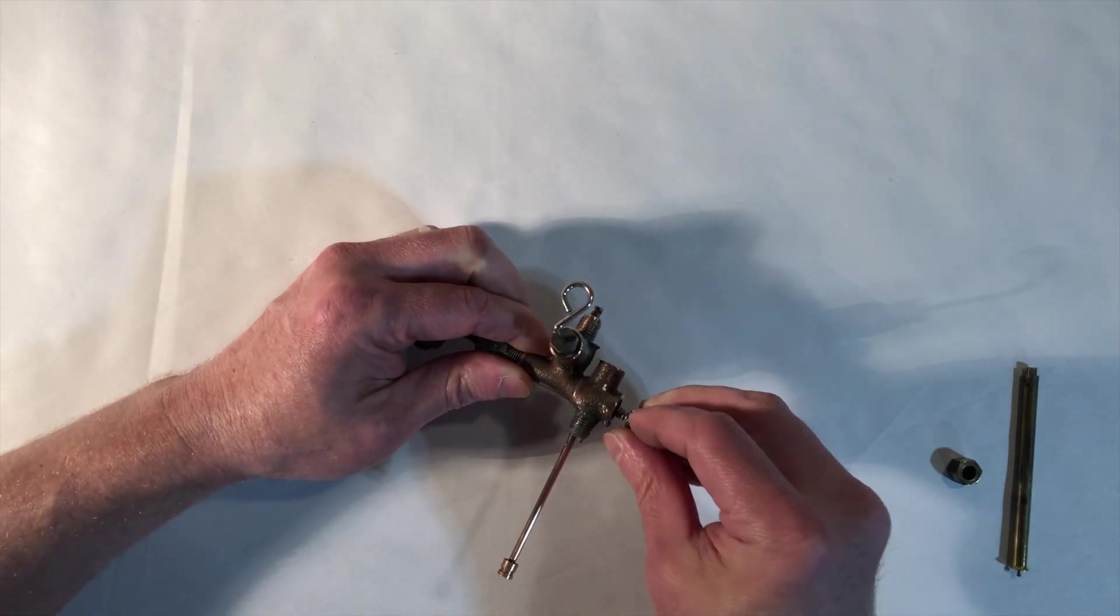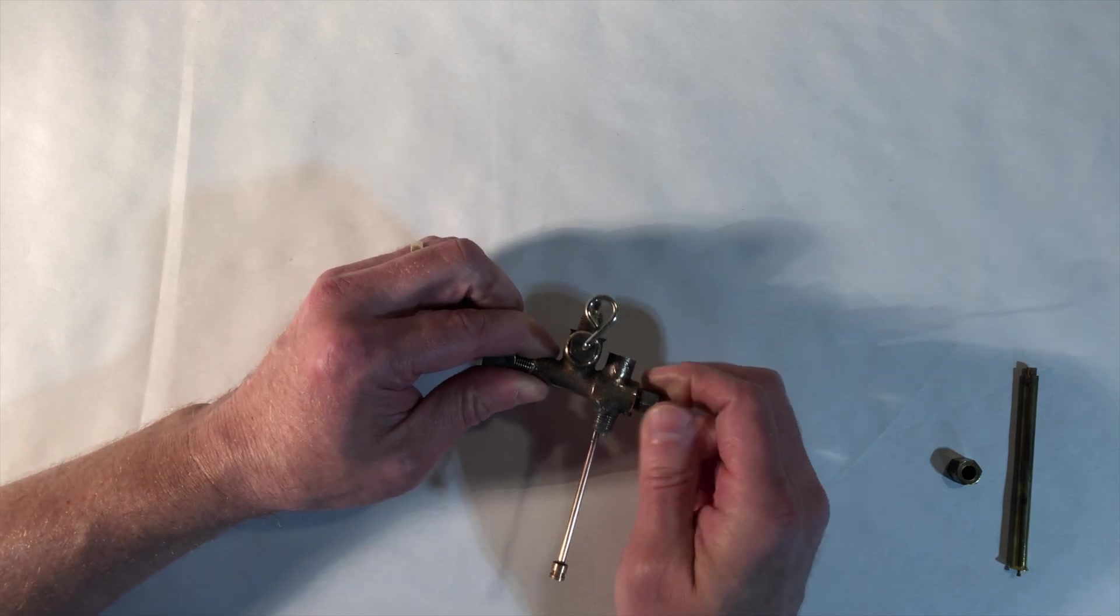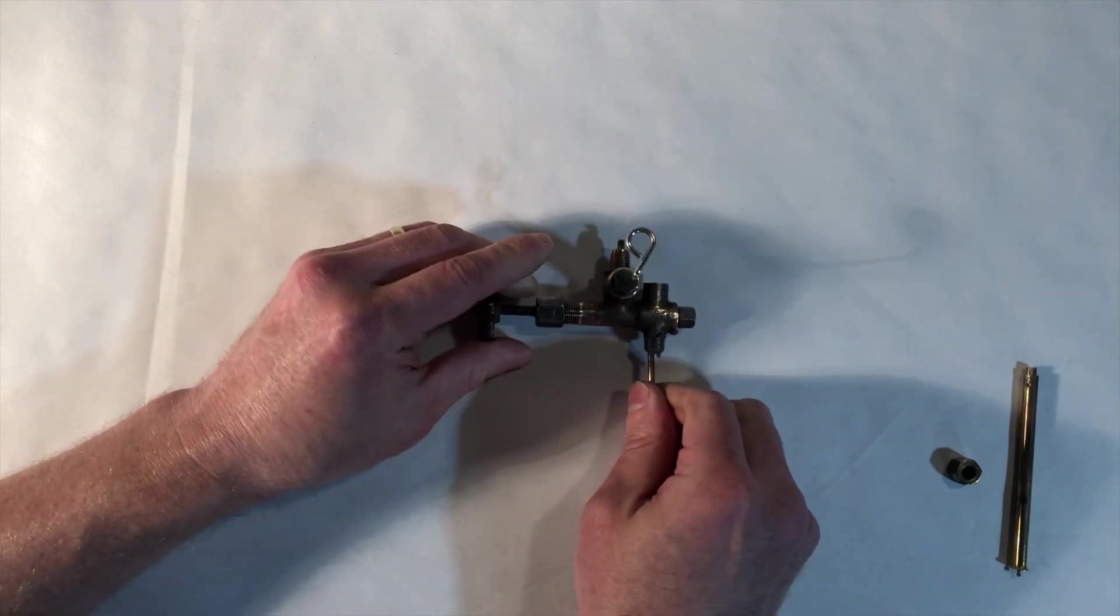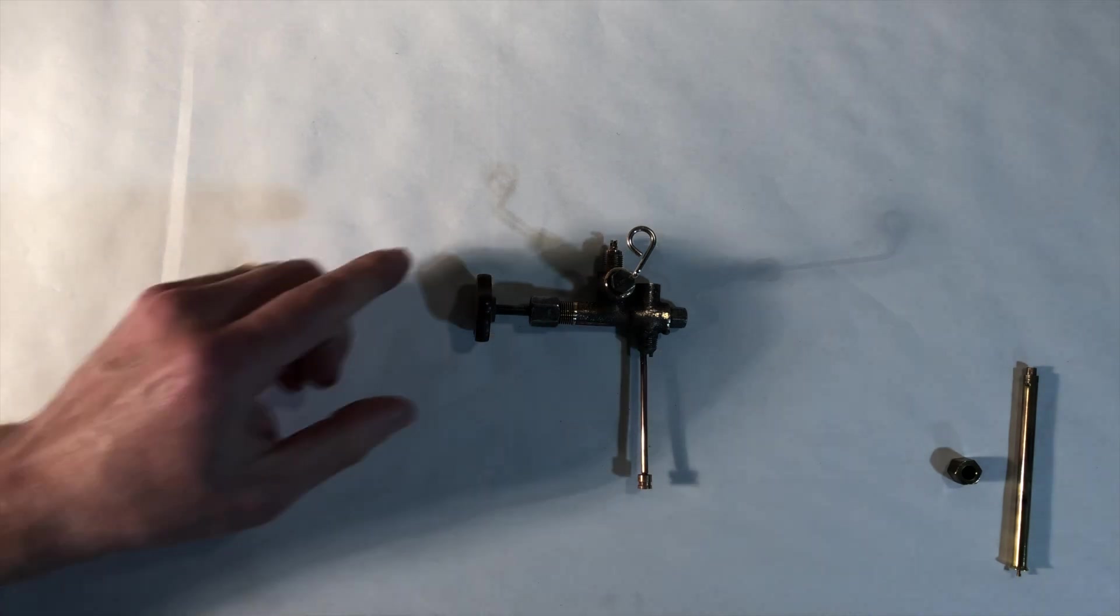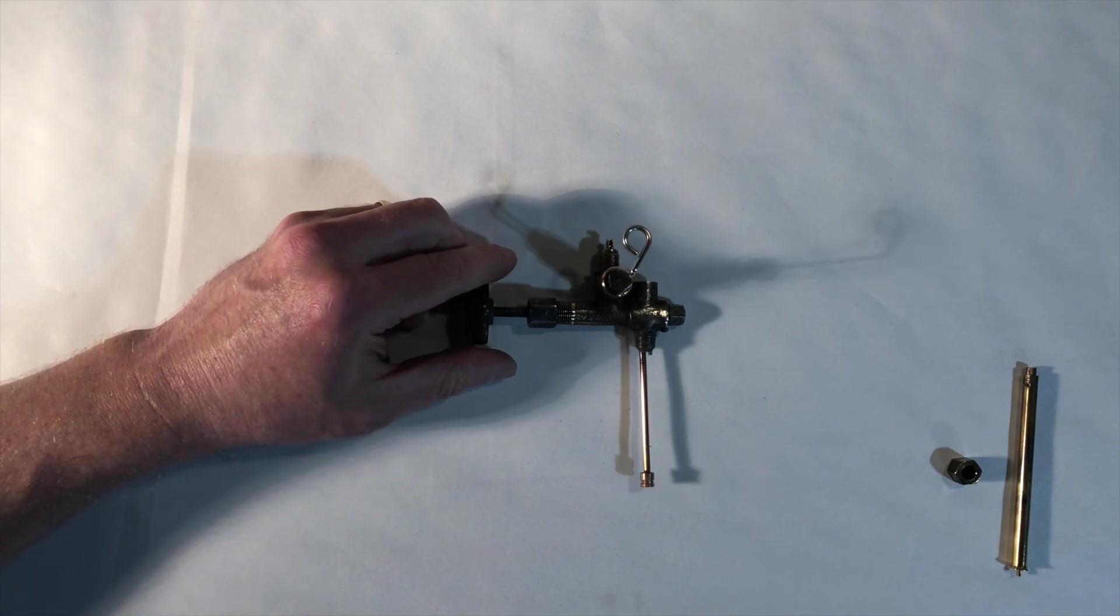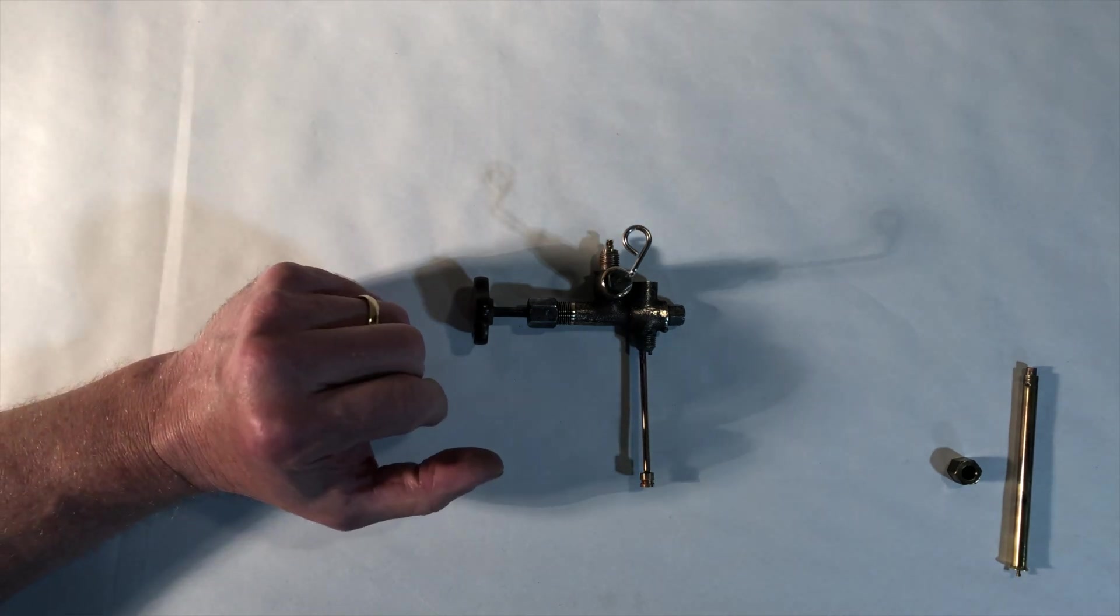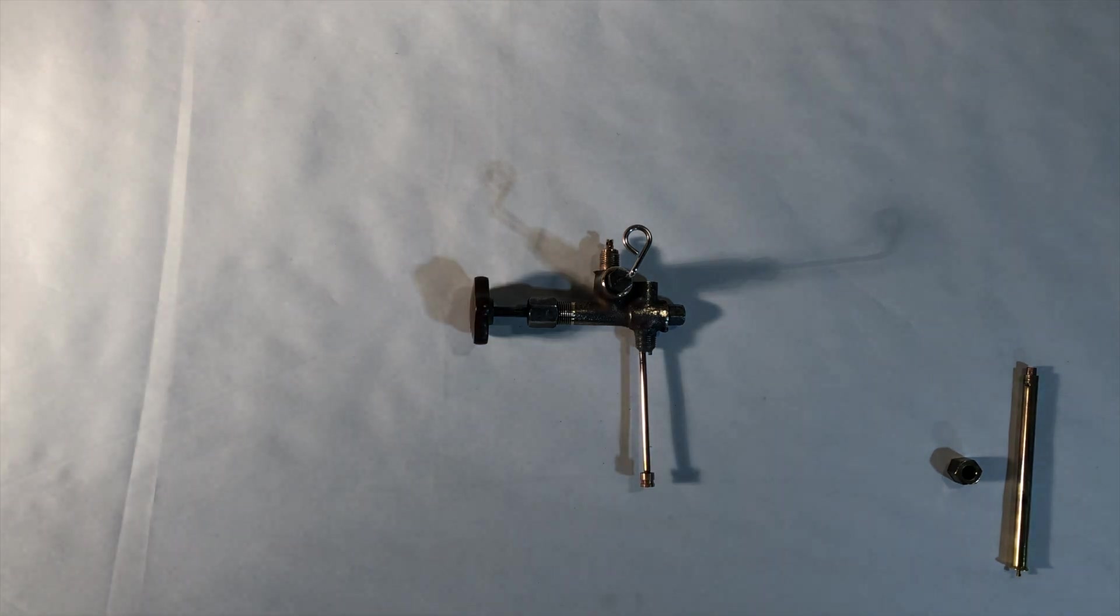So interesting design. Like I said, I think AGM introduced this in the thirties. They used it through the forties. In fact, every AGM lantern I've worked on up until some of the later camp lights in the fifties have the same design or something very similar to it. And then later on they adopted a fuel and air tube system that's essentially the same as a Coleman. I'm not sure when, but the camp light I have from 1960 from the very end of the line has that. So I hope that helped. I hope you have a better understanding of how these AGM valves work. See you next time.